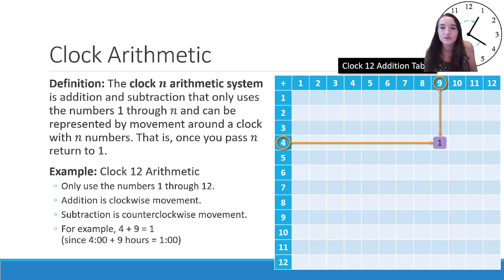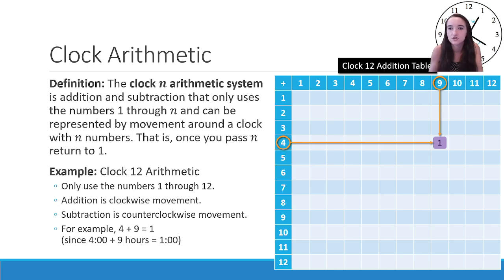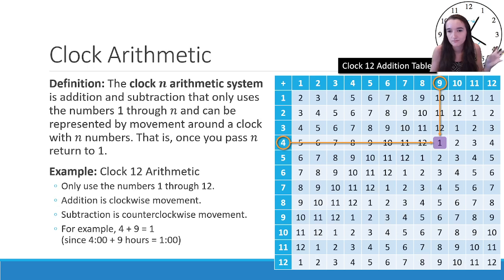Clock 12 Arithmetic uses the numbers 1 through 12. Addition is clockwise movement; subtraction is counterclockwise movement. We can create an addition table within Clock Arithmetic. For example, if I wanted to add 4 plus 9, the answer is 1 — because 4 o'clock plus 9 hours gets me to 1 o'clock. We can go around the clock the way you've been reading clocks your whole life.